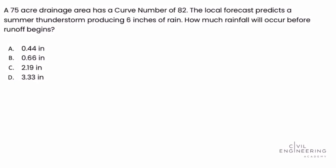The key to solving this problem is identifying that we're being asked to solve for how much rainfall will occur before runoff begins. The key phrase here is 'before runoff begins,' and what that is referring to is the initial abstraction.